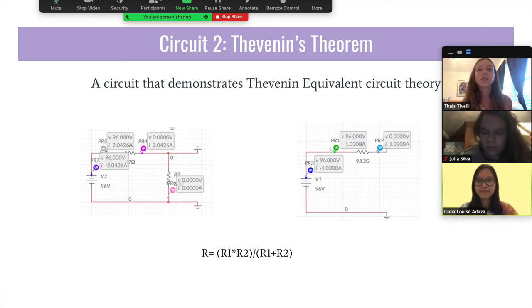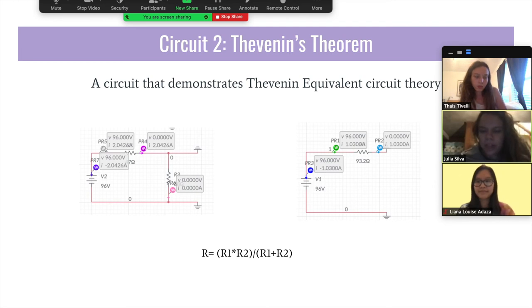Now, Julia is going to be explaining our second circuit. Since we have only one voltage source, this example is just an example of case 1, which is the independent source. On the left of our screen is the original circuit, the more complex one with two resistors. And on the right is the Thevenin's theorem model, which only has one resistor and it is in series with the voltage source.